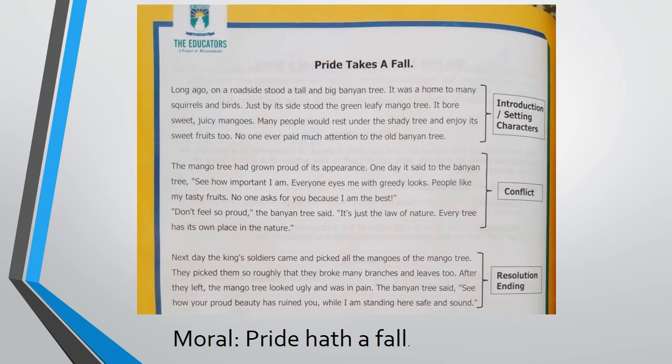The mango tree had grown proud of its appearance. One day it said to the banyan tree, 'See how important I am. Everyone eyes me with greedy looks. People like my tasty fruits. No one asks for you because I am the best.' The banyan tree replied, 'Don't feel so proud. It's just the law of nature. Every tree has its own place in nature.'